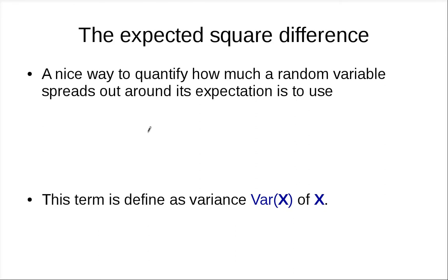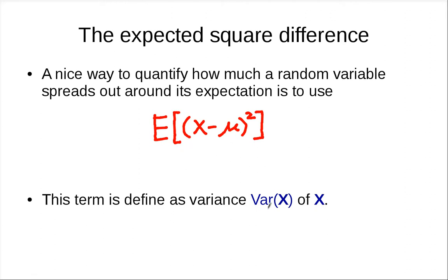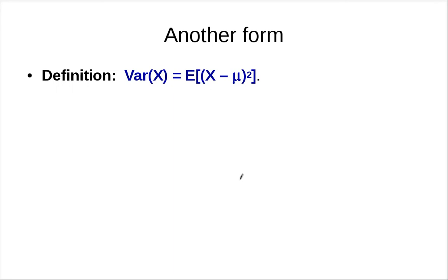To measure how spread out a random variable is from its expectation, we use the expected squared difference: E[(X − μ)²]. This term is used a lot, so people give it a name — it is the variance of the random variable X. Although this form is intuitive, computing variance directly from this form is a little difficult, because you have to subtract μ from X and then square it. So we will manipulate it to get a simpler form.